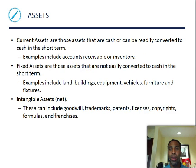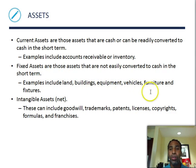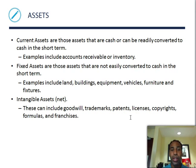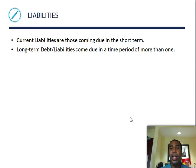Fixed assets are not easily converted into cash in the short term; examples include land, buildings, equipment, vehicles, furniture, and fixtures — though it depends. If it's a big-ticket item, it may take time to sell. Intangible assets include goodwill, trademarks, patents, licenses, copyrights, formulas, and franchises — things you can't touch.